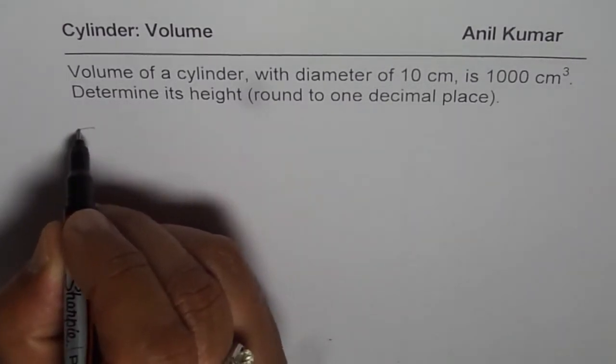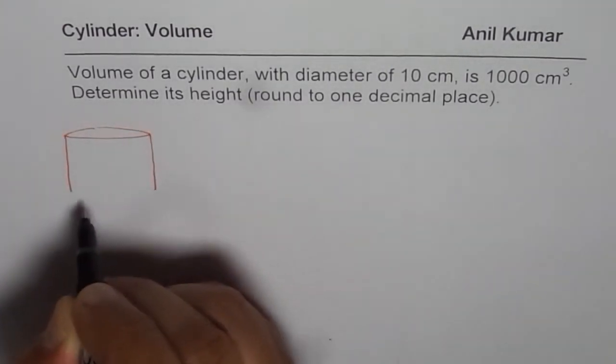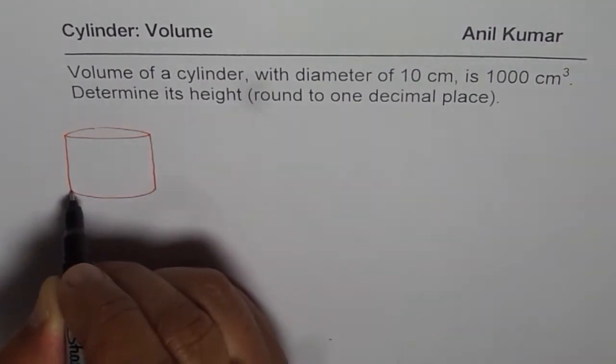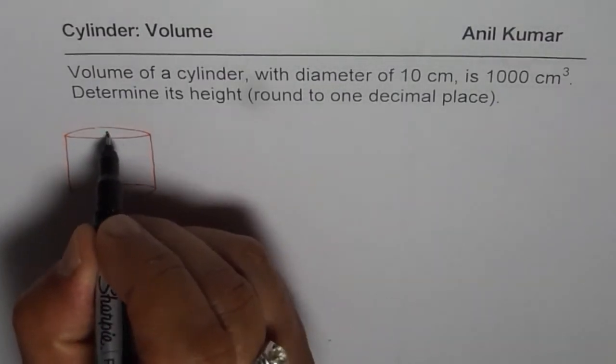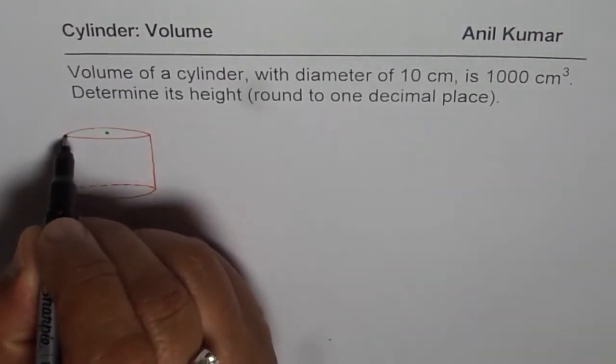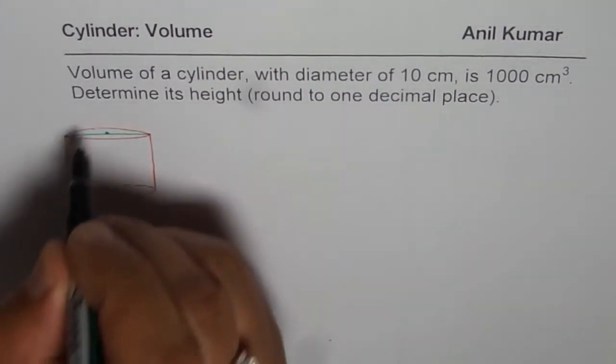So let us consider a cylinder. Let me sketch one. It helps to define variables with the help of a diagram. So here we have a cylinder and the diameter is given to us here, which is 10 cm.